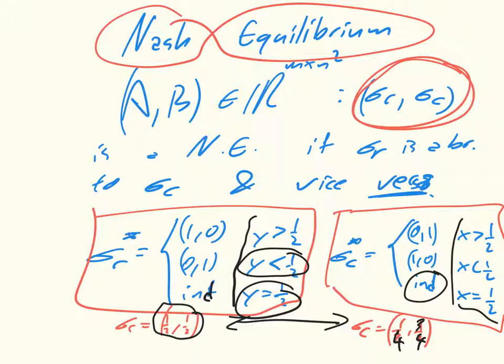So a Nash Equilibria is a set of coordinates at which neither player has a reason to move, and it's a pair of best responses.